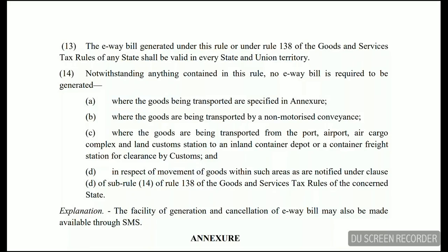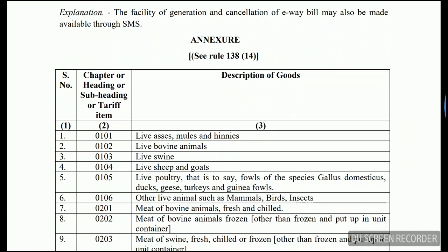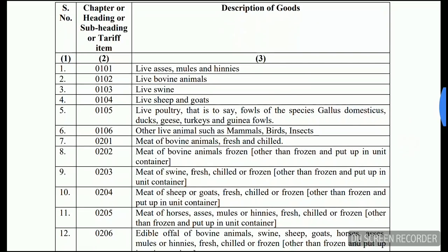Our case is section 138, rule 14, which is the annexure covering all items exempt from e-way bill. You don't need to make an e-way bill for movement of these items. This annexure is on the screen. If you want me to share this notification with you, comment below. If you want to see some description of goods, we will look at those now.